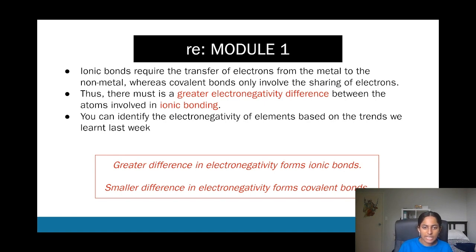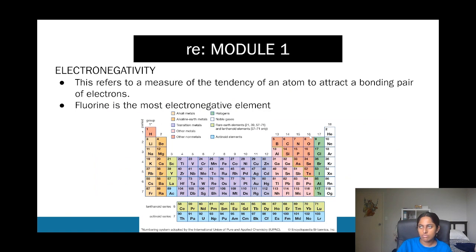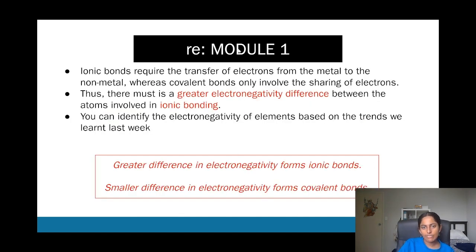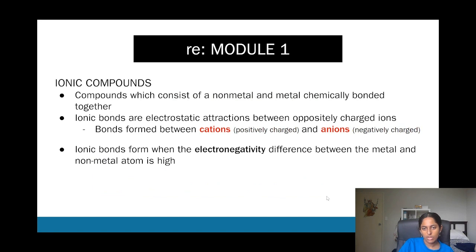If you have a smaller difference in electronegativity — let's say NO2, nitrogen and oxygen — they are next to each other so they have similar electronegativity, and therefore they form covalent bonds. Ionic bonds involve the transfer of electrons from metal to non-metal, because non-metals like to accept electrons and metals like to donate electrons.